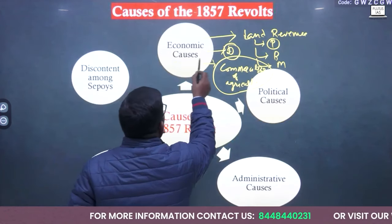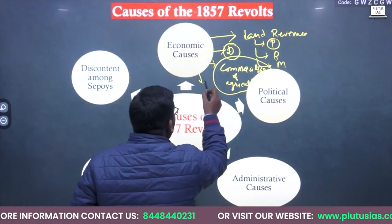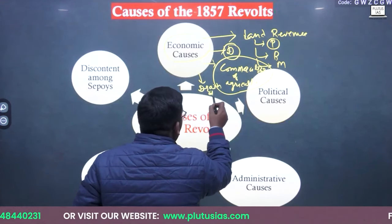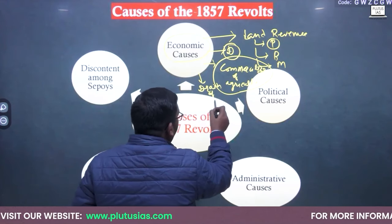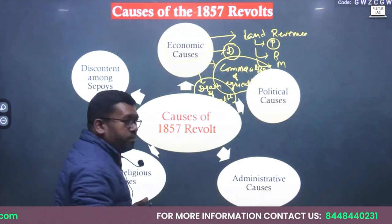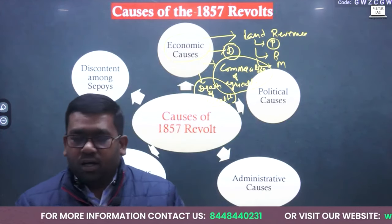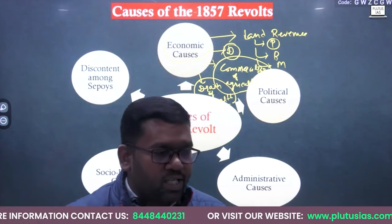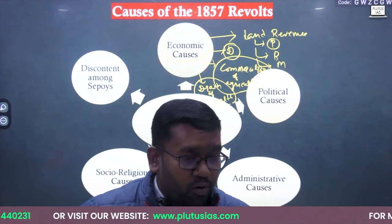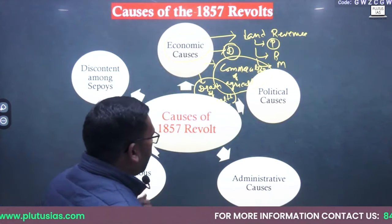The economic policy of the British was not good for the benefit of Indians. The fourth reason is drain of wealth — much of the money was taken from India to Britain. So, these are the important economic policies of the British Empire that were disturbing the Indian people. That is why Indian people revolted. This may be one of the reasons — not the most important, but one of the reasons — for the outbreak of the 1857 revolt.